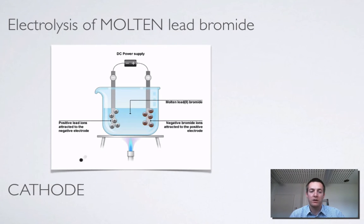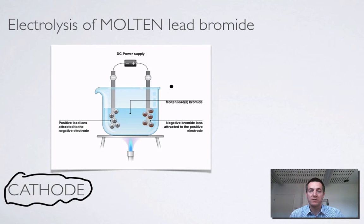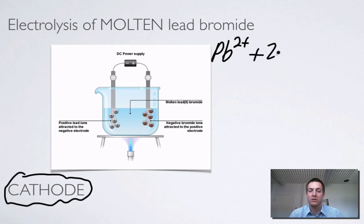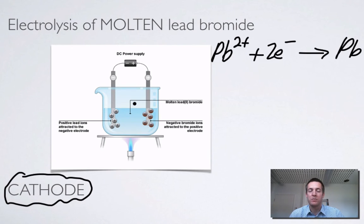Now let's look at what's going on at the cathode. Although electrolysis of molten substances is difficult from a practical perspective, from a theoretical perspective it's very easy to see what's going on because there are only ever going to be two ions. Lead ions are the ones that are going to get reduced — they're going to gain electrons. This happens at the negative electrode because positive ions are attracted there, and that's going to make lead, which would actually be molten at these temperatures. So just the formation of a silvery grey solid would be a fine observation, even though it's going to be a silvery grey liquid.